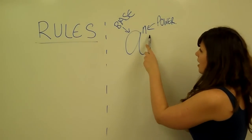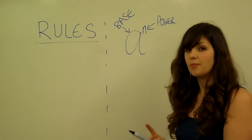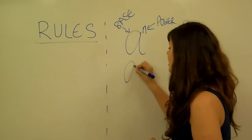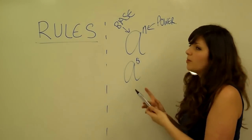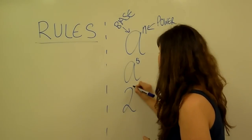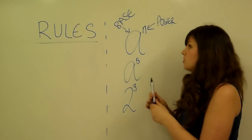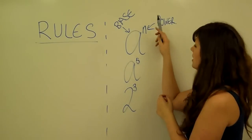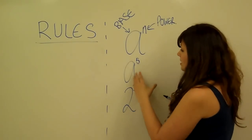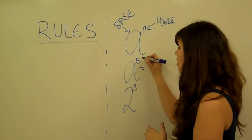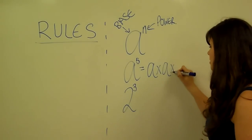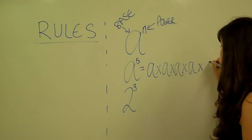So first let's hit the case where our power is a positive number — so it's greater than or equal to 1. We could have something like A to the power of 5, or if we put in a number as our base, we could have 2 to the power of 3. What it basically means is that you're taking N lots of your base and multiplying them together. So A to the power of 5 is just 5 lots of A multiplied together: A times A times A times A times A.